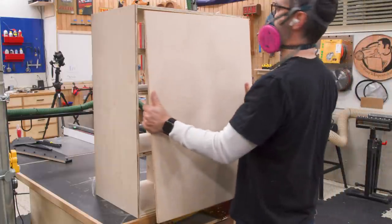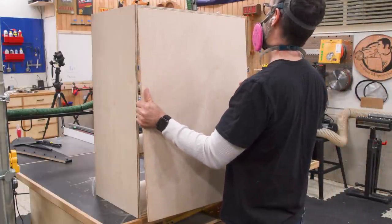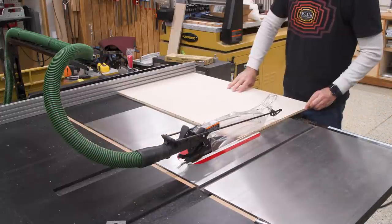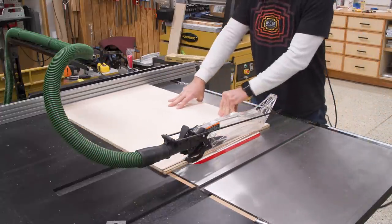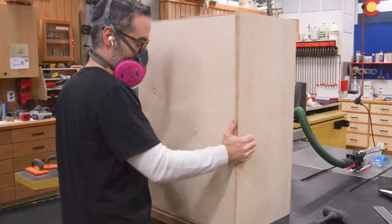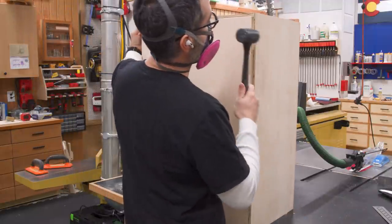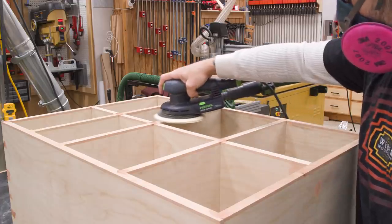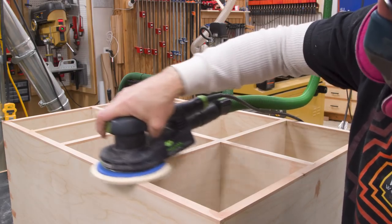Now for the back panel, I'll simply measure and cut a half inch panel to size. I won't be gluing this in just yet. We'll do that after finishing. It's going to be much easier to finish the interior of this thing without a back panel in place. Next, I'll do a little bit of sanding and ease the edges with a small round over.